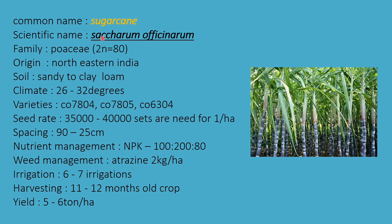The sugar crop sugarcane has scientific name Saccharum officinarum, family Poaceae. Chromosome number 2n = 80, origin Northeastern India. Sandy to clay loamy soils are best suitable. Climate required is 26 to 32 degrees. Varieties are CO 7804, CO 7805, and CO 6304 — CO refers to Coimbatore. Seed rate is 35,000 to 40,000 sets per hectare.